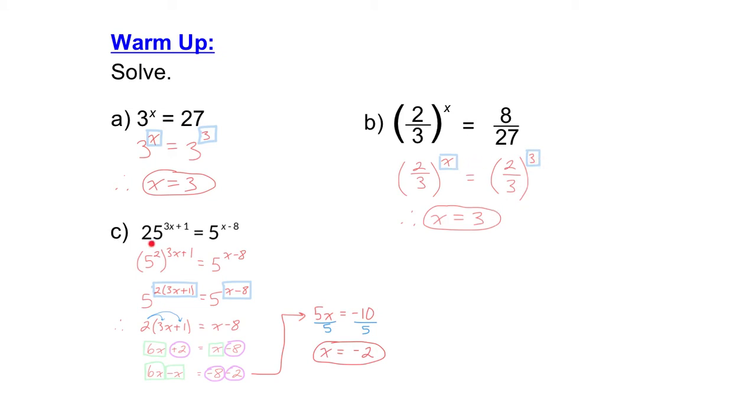For the last one, 25 can be written as 5 squared. So now you have powers with the same base. Here I have a power over power, so multiply your exponents. 2 times 3x plus 1 is your exponent on the first power. It's equal to the exponent on the other power. So 2 times 3x plus 1 equals x minus 8.